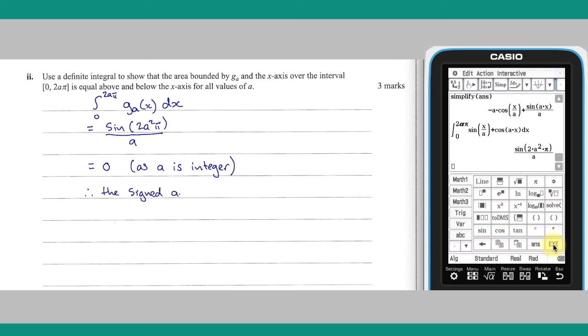So the signed area above the x-axis, positive, and below the x-axis, negative, cancel out, and therefore these areas are equal in magnitude.